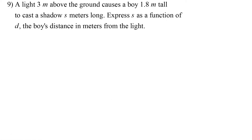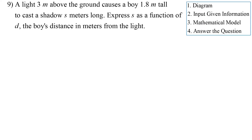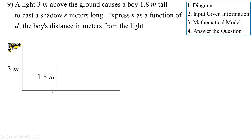Number nine: a light three meters above the ground causes a boy 1.8 meters tall to cast a shadow S meters long. The light is three meters above the ground, and the boy is 1.8 meters tall. The shadow S is the distance along the ground. Express S as a function of D, the boy's distance in meters from the light.